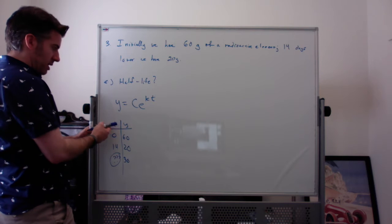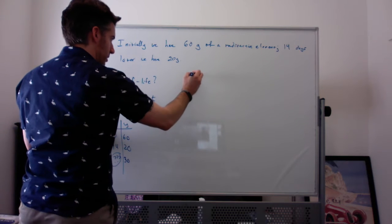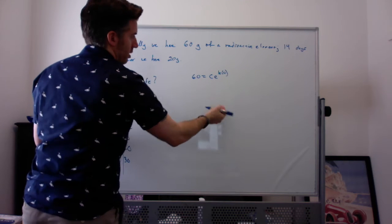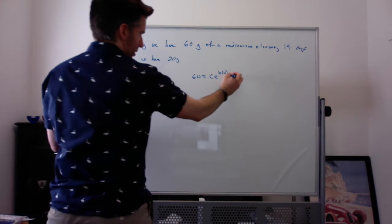So, plug in 0 for t and 60 for y, I get 60 equal to c e^(k times 0). e^0 is 1, so I get c equal to 60.